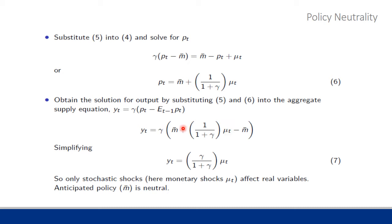Aggregate output supplied is equal to some proportion of the difference between the price level and the expected price. Substituting our solutions for P_T and EP_T into the aggregate supply equation: Y_T equals gamma times P_T — now replaced by the solution given in equation six — minus EP_T replaced by its solution M-bar. M-bar minus M-bar clears to zero, so we have equilibrium output as Y_T equal to (gamma / (1 + gamma)) times the monetary shock mu_T.